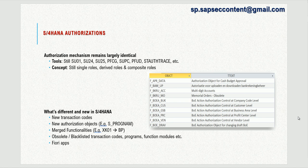The concept of authorizations in S4HANA is basically the same as in ECC. You will still use the concepts of single roles, derived roles, and composite roles. From a transaction standpoint, you will still use transactions like SU01 for managing user IDs, PFCG for managing roles, SU25 for upgrading roles, and SU24 for tying authorization objects to transaction codes. All familiar transactions are still available in S4HANA.